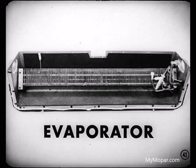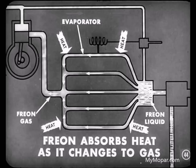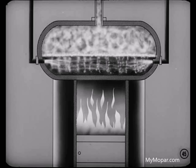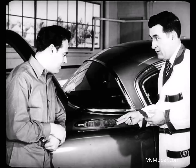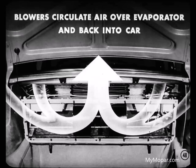From the expansion valve, the Freon — which is now changing to a gas — goes to another unit called the evaporator. The evaporator is large, so the pressure is relieved some more and the Freon continues to evaporate. By the time it reaches the opposite end of the evaporator, it is all gas. That's the secret of air conditioning, because while it is changing to a gas, it is absorbing heat. Our Freon gas is going to absorb heat from the air which surrounds the evaporator — the air drawn out of the passenger compartment, plus the fresh air drawn from outside. Blowers draw the air in, circulate it around the evaporator coils, and blow it back into the car after it's been filtered and has had the heat and moisture taken out of it.